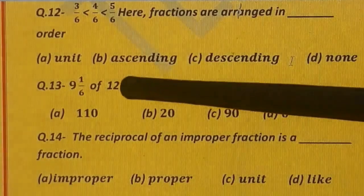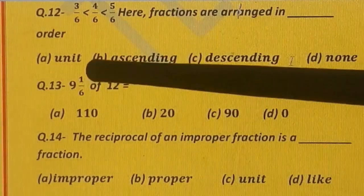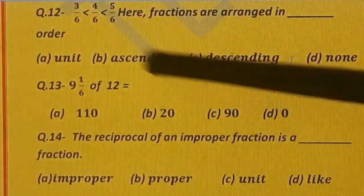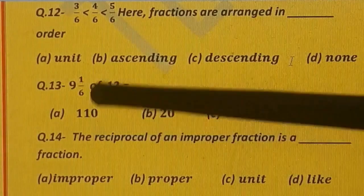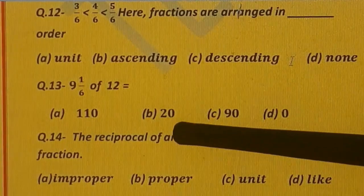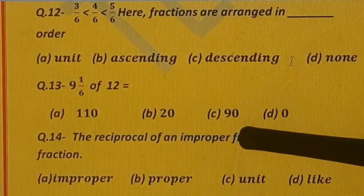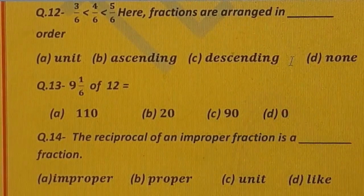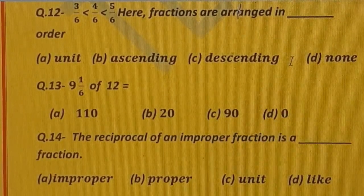Question number 13. 9 whole 1 upon 6 of 12 is equal to dash. You have to solve and tell the correct answer. Options are: A) 110, B) 20, C) 90, and D) 0.